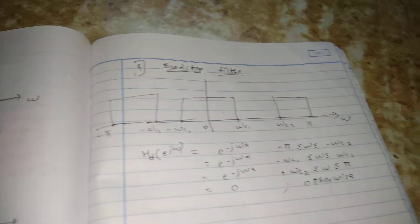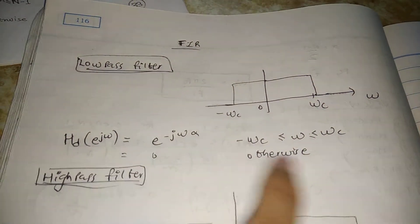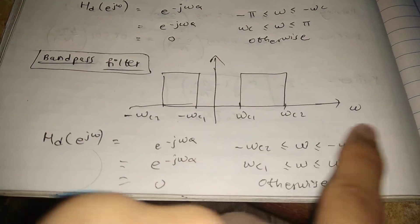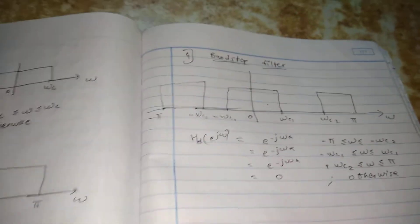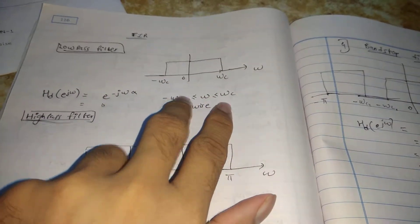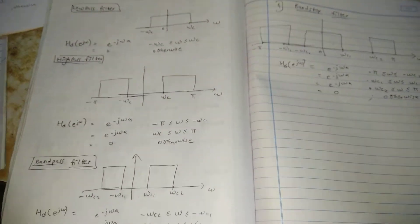So like this, we have the four types of filter designs for FIR. First is low pass filter, then high pass filter, then band pass filter, and finally band stop filter — each with its own equation. Remember the diagrams and from the diagrams you can set up the ranges quite easily. I hope you liked and understood this video. Thank you so much for watching, make sure to subscribe to my channel for more such videos.